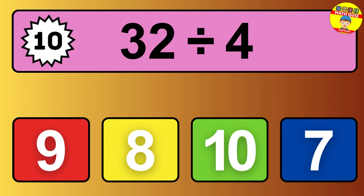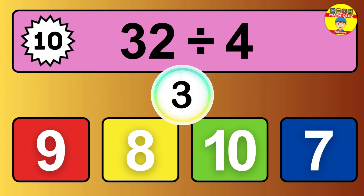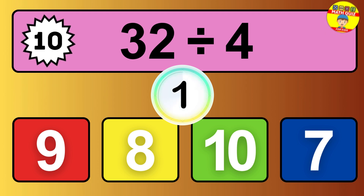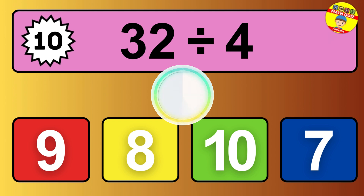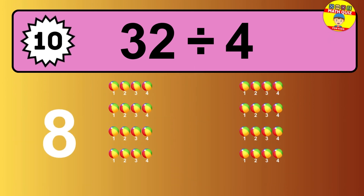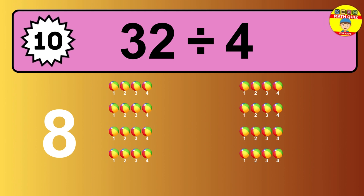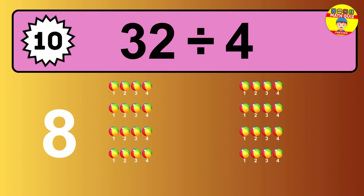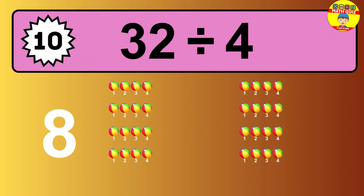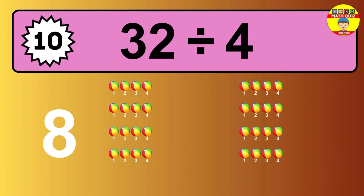32 divided by 4 — time to think. Let's go to the solution. Divide the number 32 by 4. Each group contains 4 units, so dividing 32 by 4 results in 8 equal groups. Thus, the result is 32 divided by 4 equals 8.